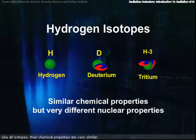Like all isotopes, their chemical properties are very similar, because chemistry is largely governed by the bonds between the outer electrons. But their nuclear properties are often very different.